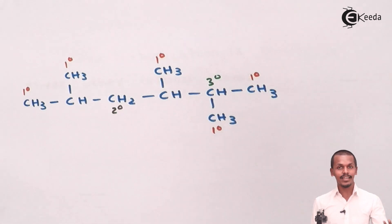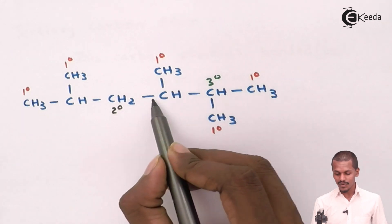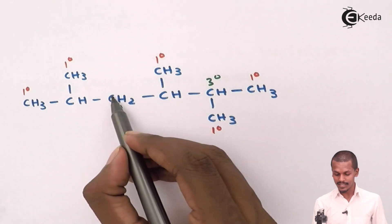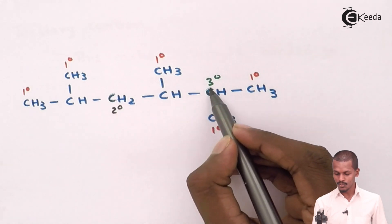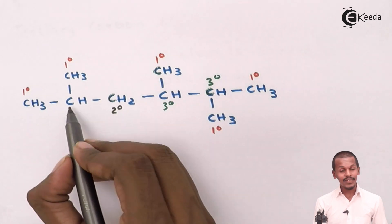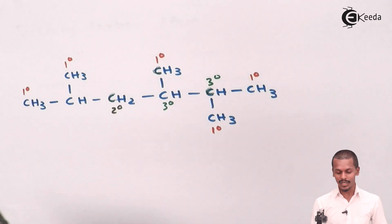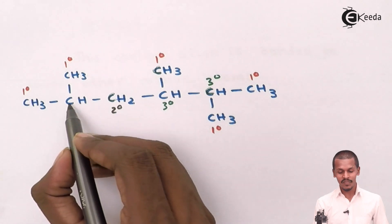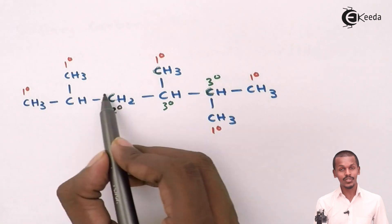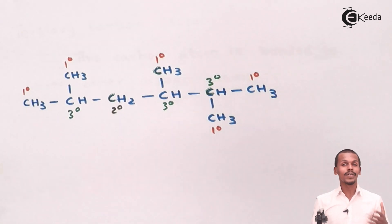Is there any other tertiary carbon atom? This carbon is attached to three carbon atoms — one, two, and three — making it a 3 degree carbon atom. And this remaining carbon is also attached to three different carbon atoms, making it a tertiary carbon atom as well. It was very easy to understand.